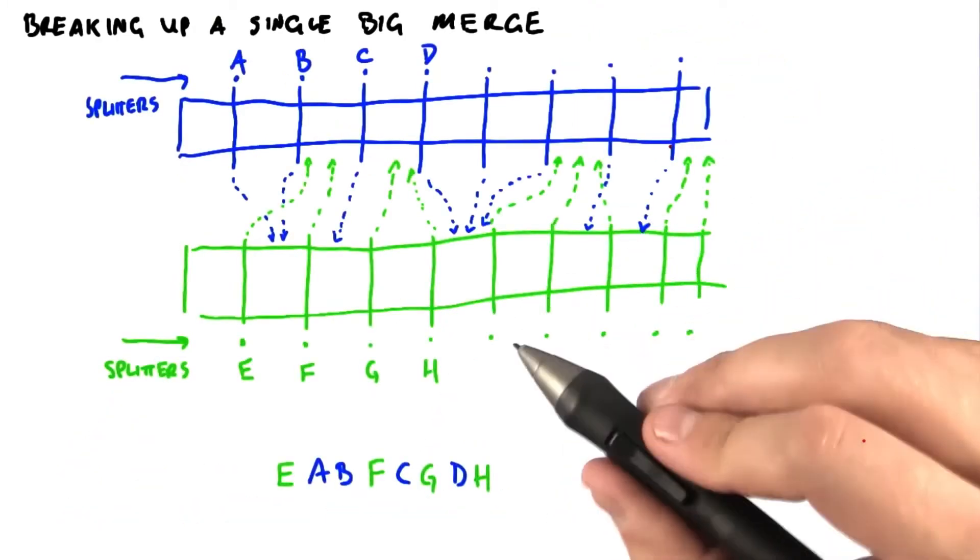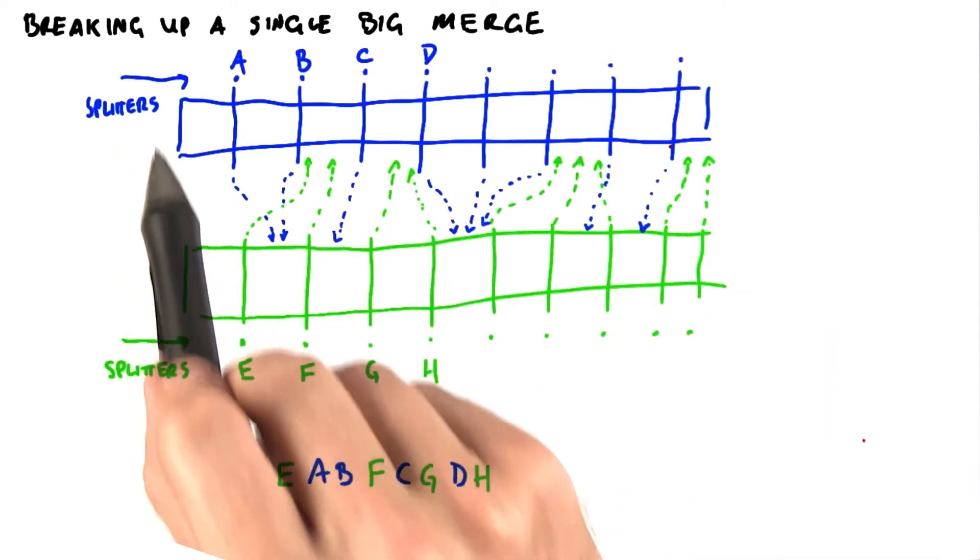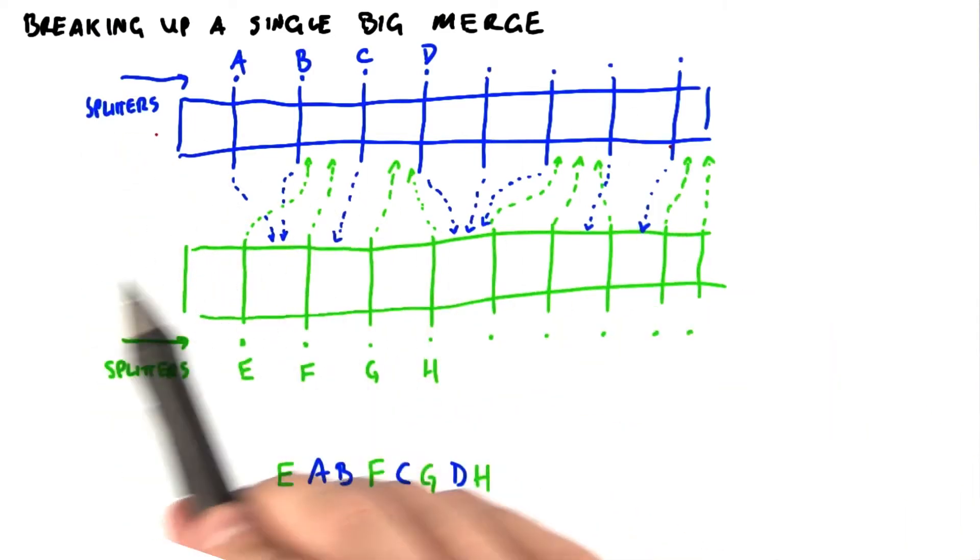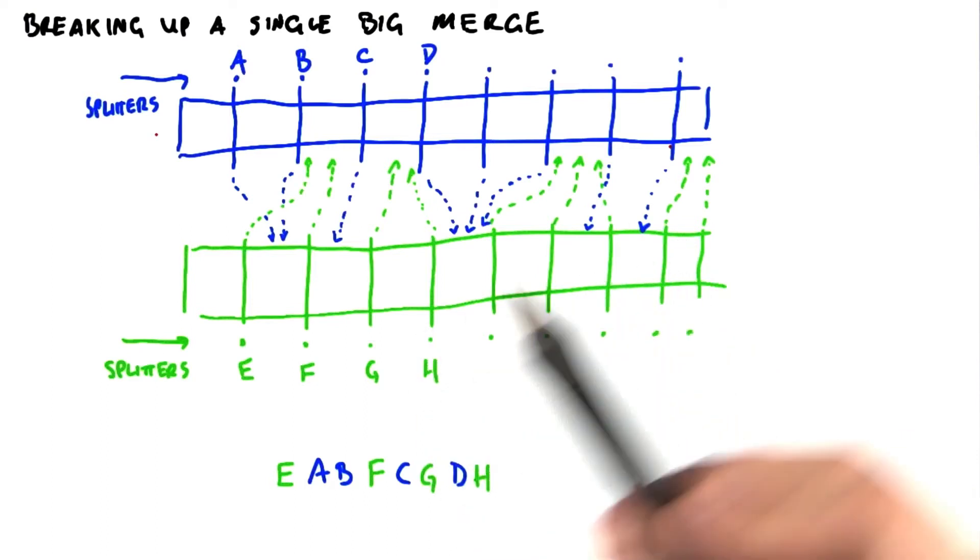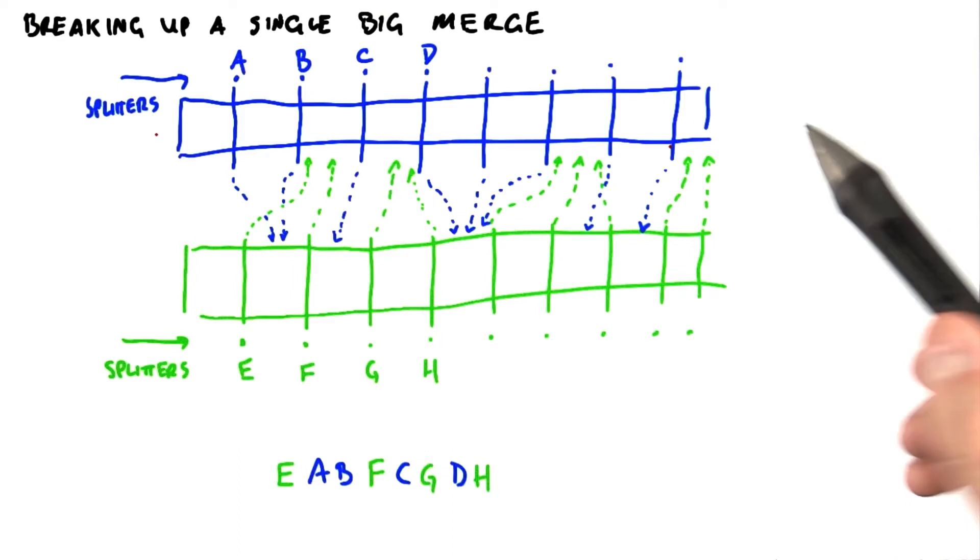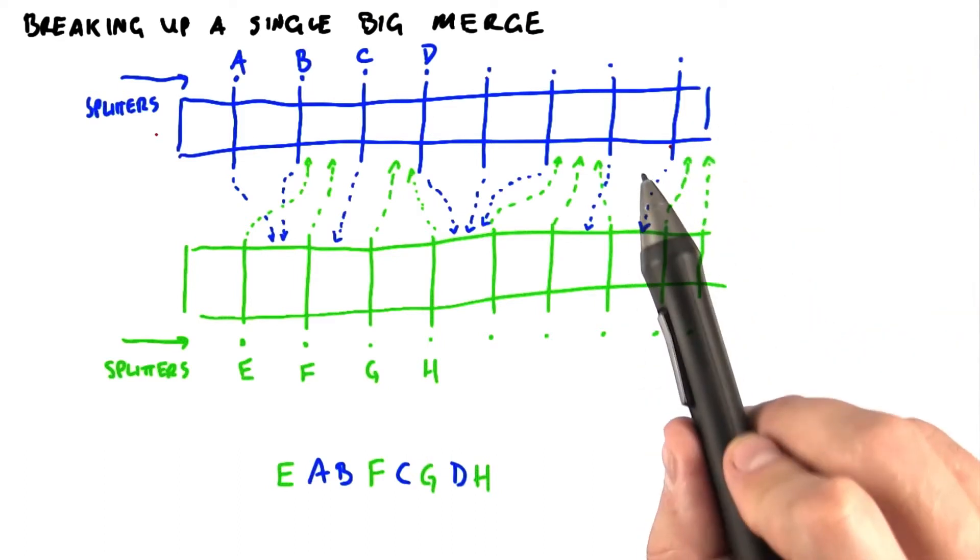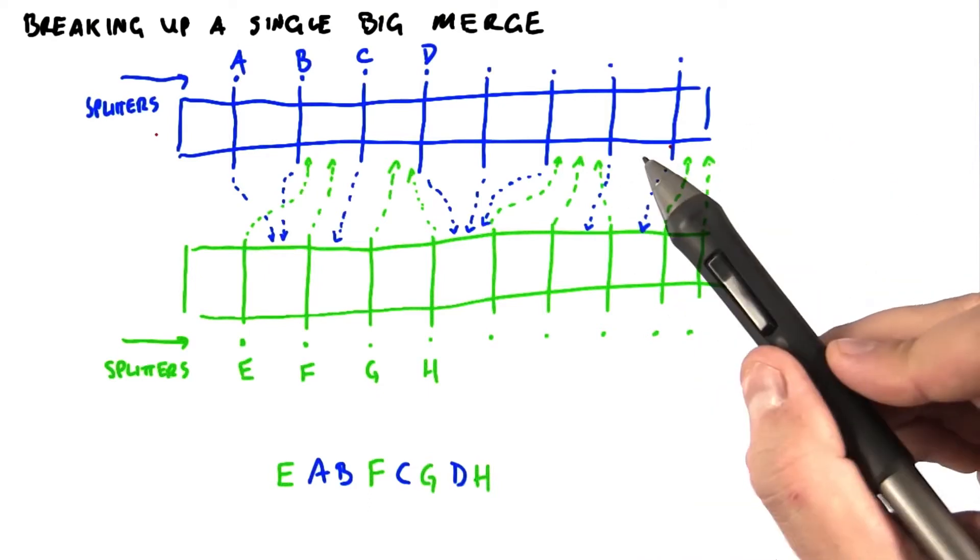So the algorithm for doing this is pretty cool. The goal is that when we're breaking up these two long lists, this blue list and this green list, into shorter sub-lists and then merging the results, that we don't have any sub-tasks that are too big to do on one SM. It's okay for us to have some smaller and some bigger sub-tasks, but we don't want a sub-task that's too big for one SM.